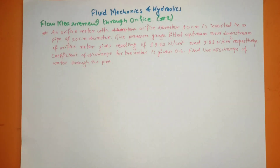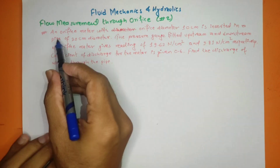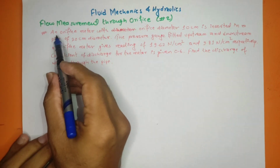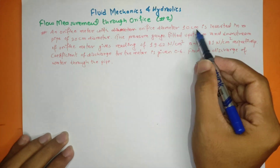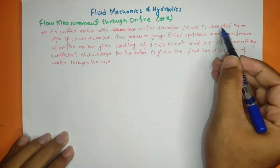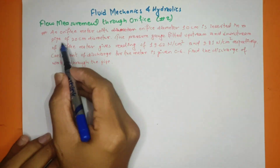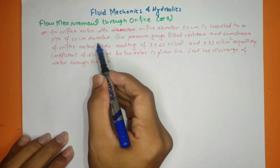Welcome to the YouTube channel of Fluid Mechanics and Hydraulics Subjects. This is the Floor Measurement Unit on the orifice meter. The question is: an orifice meter with an orifice diameter of 10 cm is inserted in a pipe of 20 cm diameter.